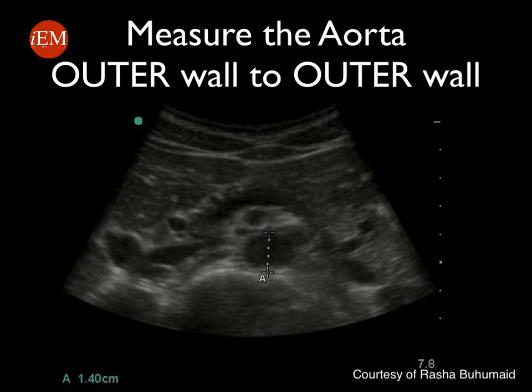If you are unable to evaluate the whole abdominal aorta and your exam is limited, at least visualizing the abdominal aorta just above the bifurcation is very essential, as most abdominal aortic aneurysms are infrarenal. A normal abdominal aorta measures less than three centimeters.